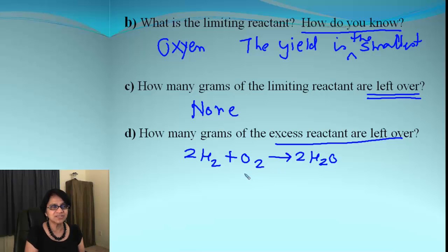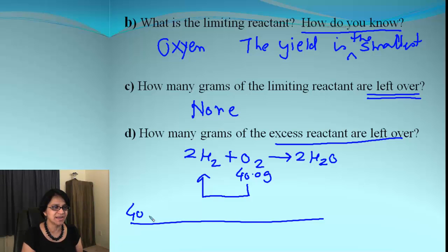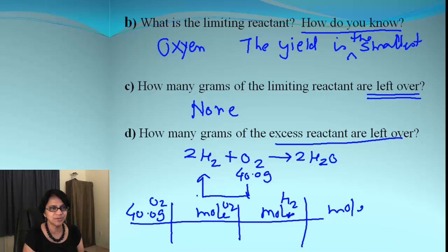Now we know oxygen, which was 40 grams, is going to be used up. That's the limiting reactant. So let's find out how much hydrogen it needs to form the correct amount of water. Our roadmap now begins from oxygen and it's going to end up with hydrogen amount. So grams, we go to moles, then there is a mole to mole roadmap, we go to moles of H2.